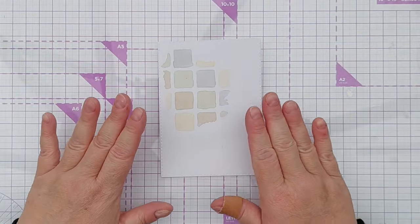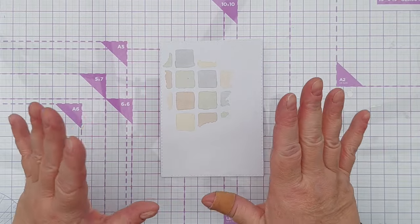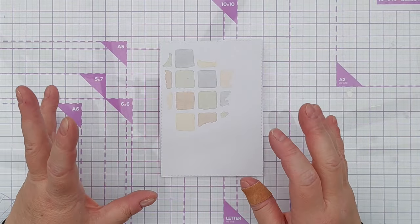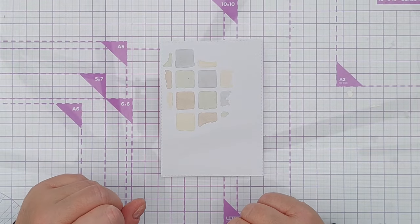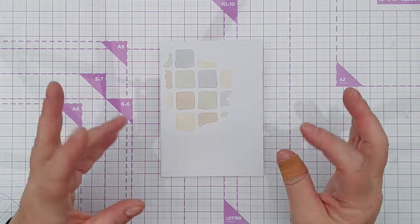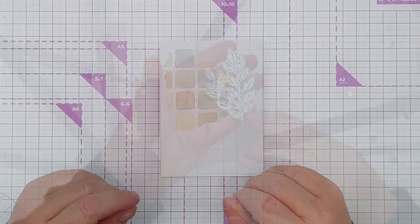So there we go, I've taken the pencil lines off and I've got a nice wibbly wobbly tiled pattern and there are some little bits of pencil line showing but they just create a kind of shadow or depth and dimension which I like.